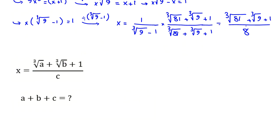The problem says x is in this form, so we can say a = 81, b = 9, and c = 8. So 81 + 9 = 90, and 90 + 8 = 98.